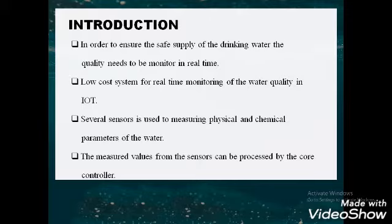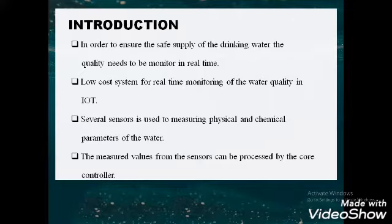In this project we have used a few sensors: pH sensor, temperature sensor, turbidity sensor, and flow sensor. We use these sensors to measure the physical and chemical parameters of water. pH of water is a chemical parameter, measured using the pH sensor. Temperature and turbidity are physical parameters, measured using the temperature sensor and turbidity sensor respectively.